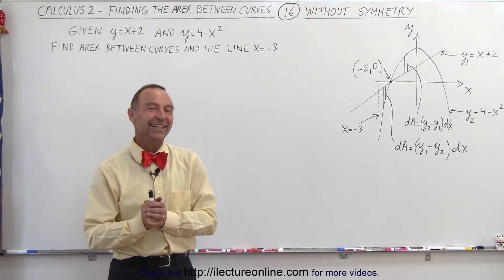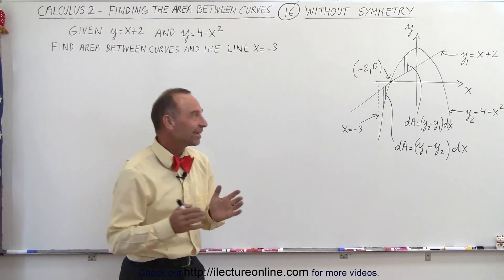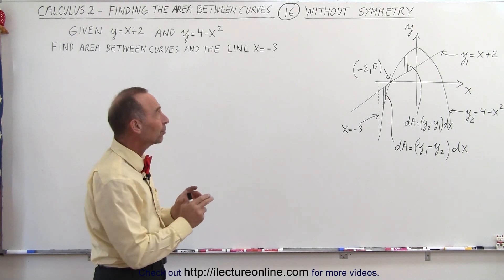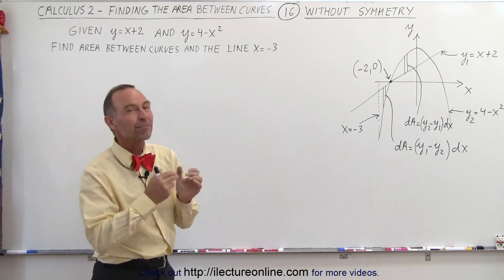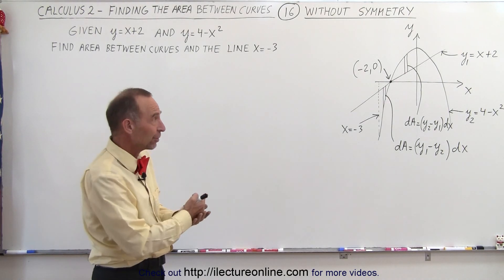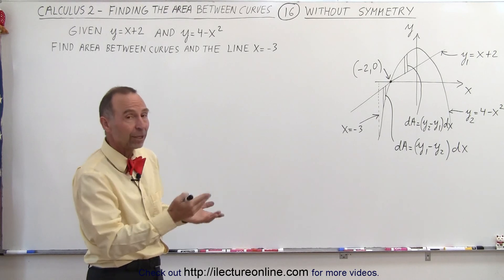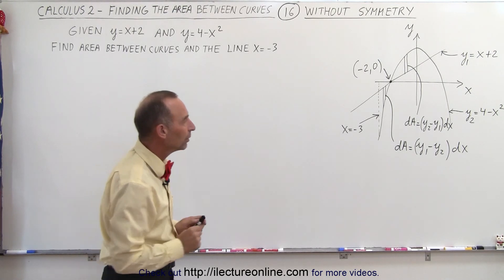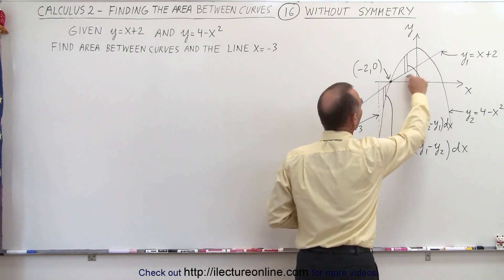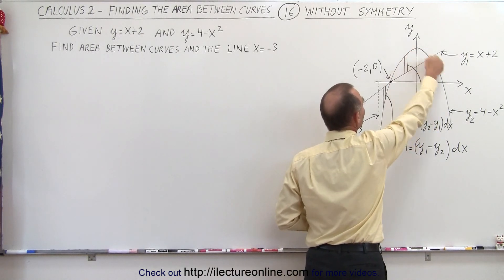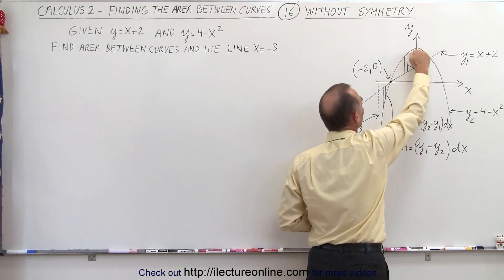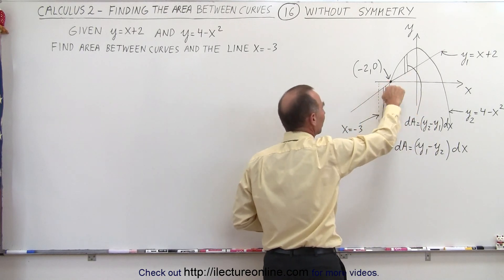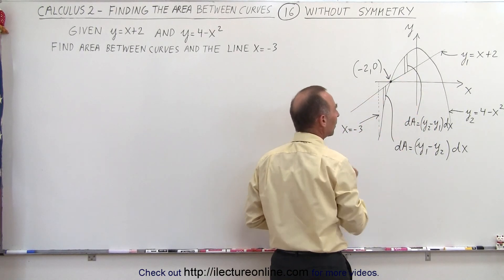Welcome to our lecture online. Our next example deals with two separate areas, but in this case the areas are not symmetrical, so we can't just find the area of one and simply double it. We have to calculate the area of each one. Notice here the area between the two curves: we have the parabola which is higher than the straight line, but here it's in reverse — the straight line is higher than the parabola.